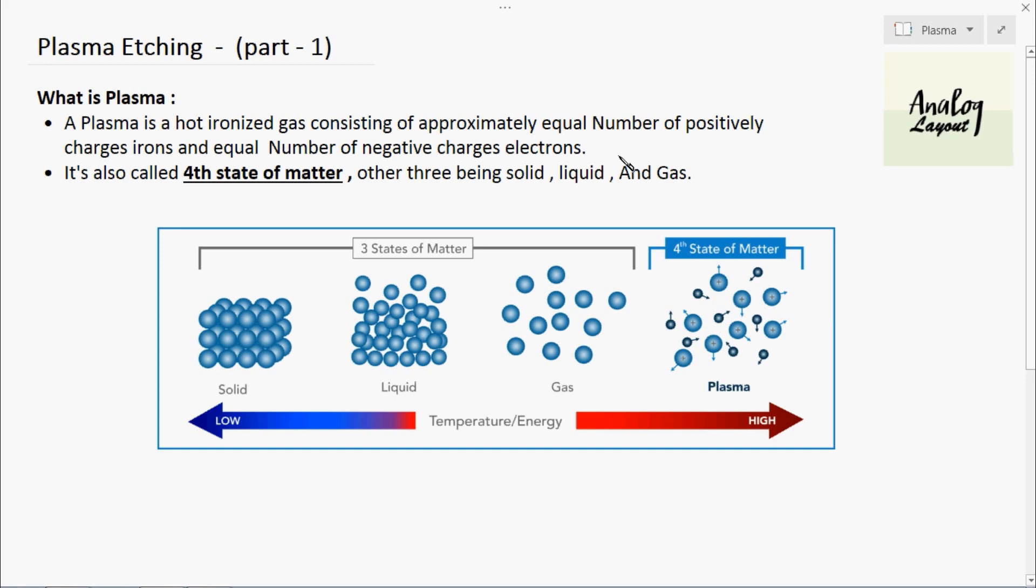Because of this, the plasma is always neutral. It is also called the fourth state of matter, and the other three states are solid, liquid, and gas stage.